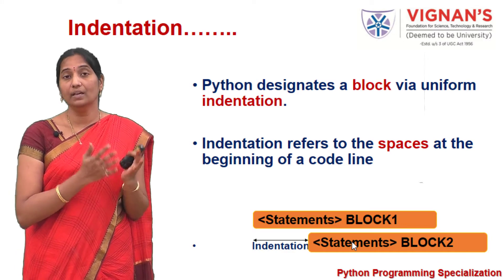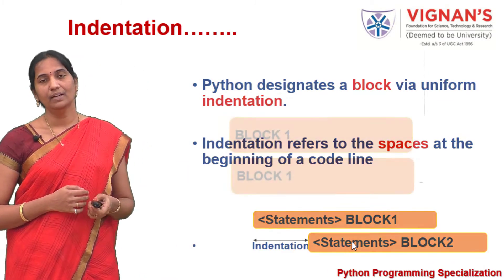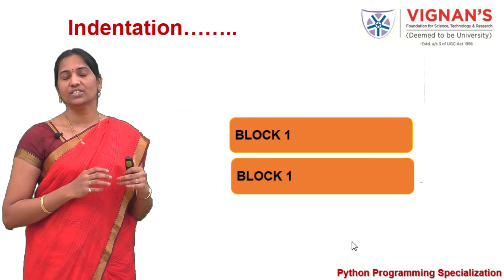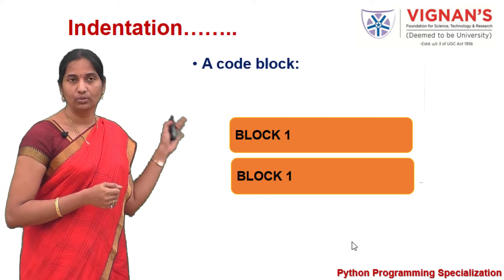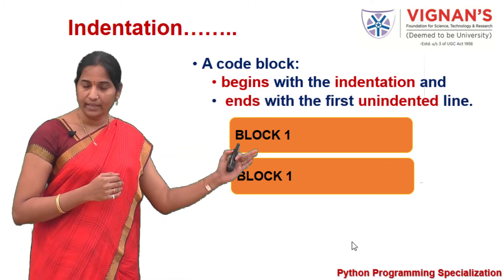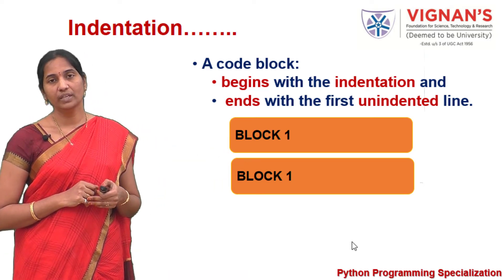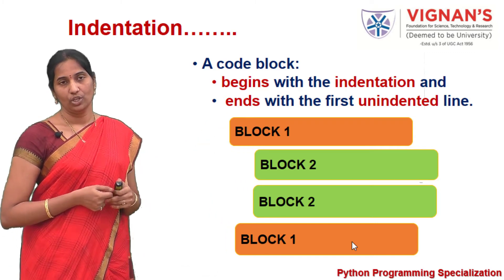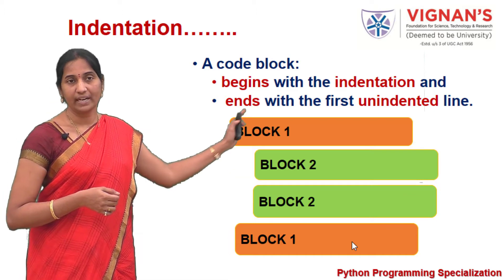In Python, indentation is mandatory and you cannot escape from it, thereby avoiding certain kinds of errors. When two sets of statements follow the same indentation, they constitute the same block. Every code block starts with indentation, and when the indentation closes, the block ends. A new code block is introduced by increasing the indentation — for example, block two is nested inside block one with its own uniform indentation.